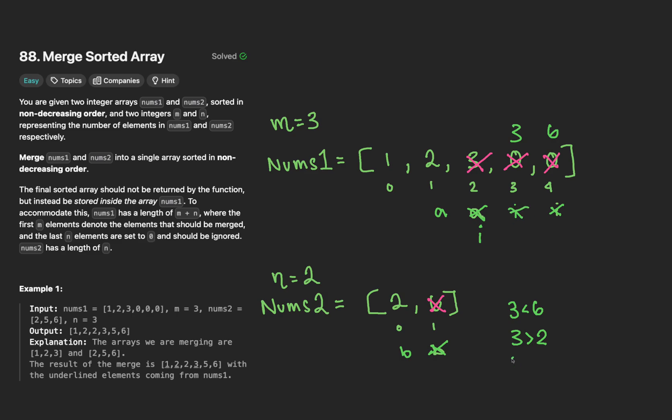On the next iteration, we have a 2 at a and a 2 at b. In this scenario, the two elements equal each other. So for our case, we're going to just take whatever is at a. Since we took what's at a, we're going to decrement a here and decrement i.